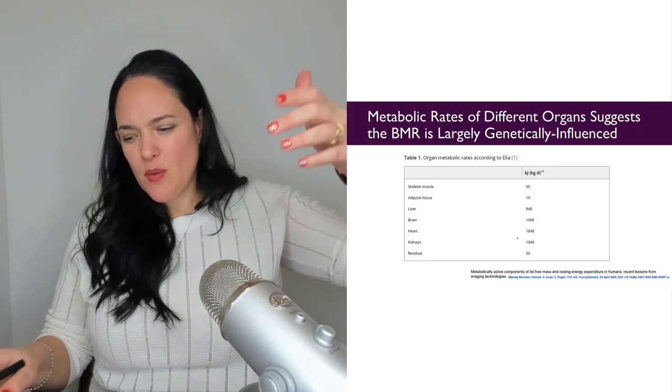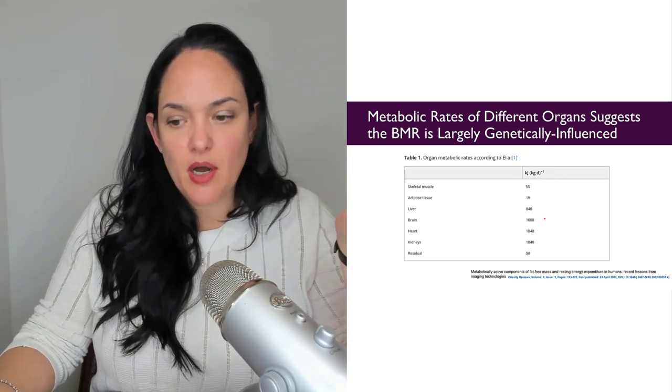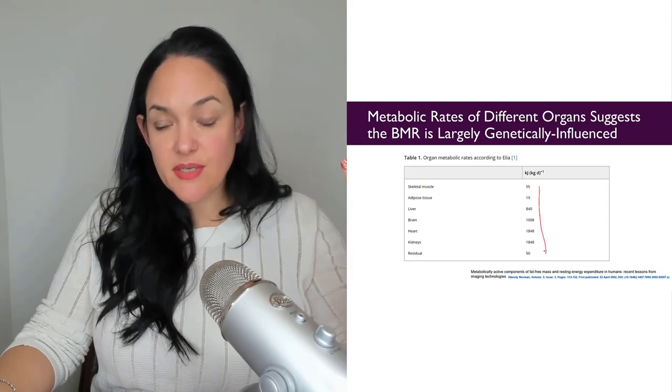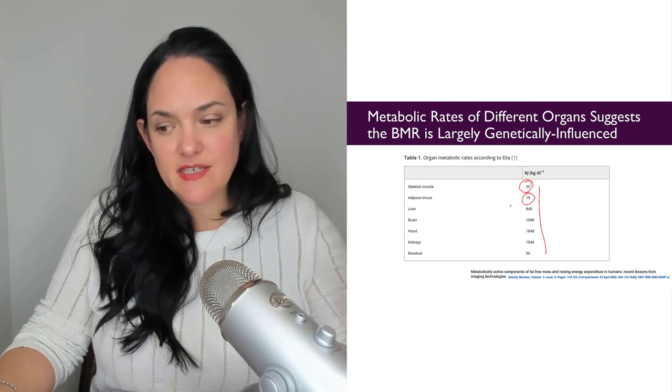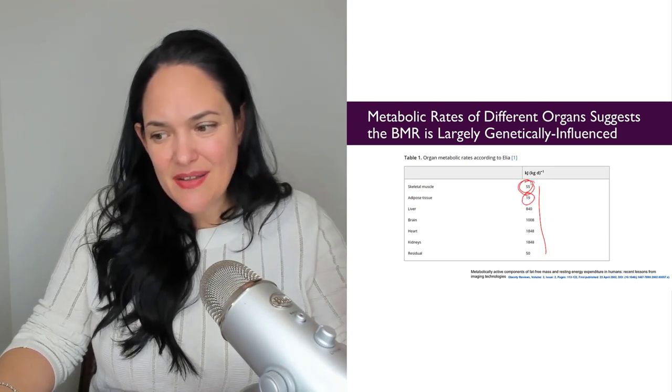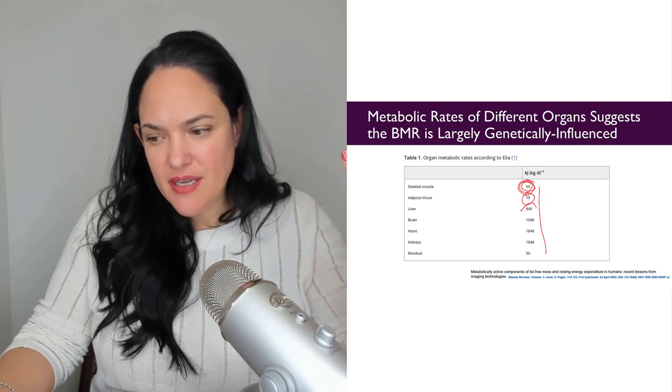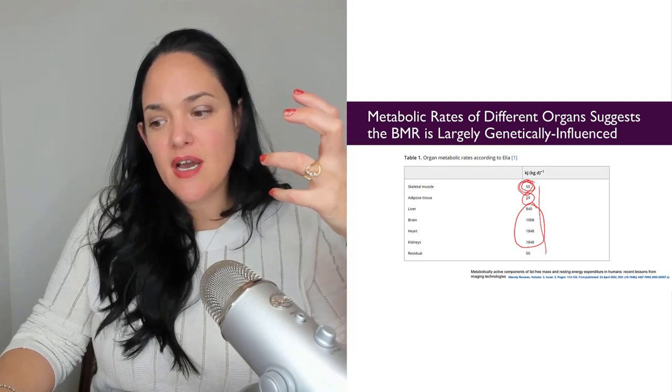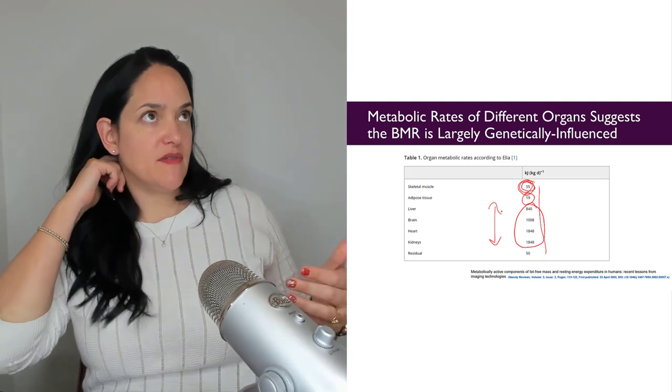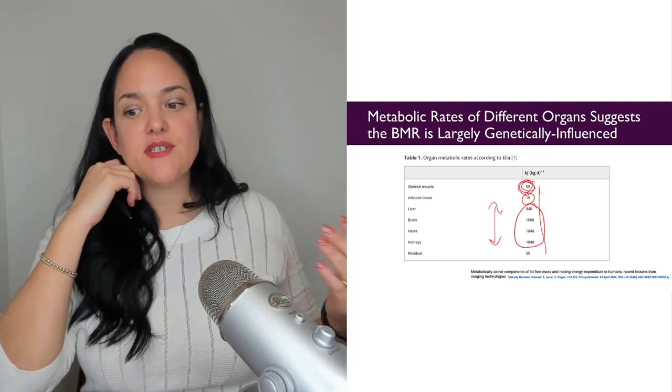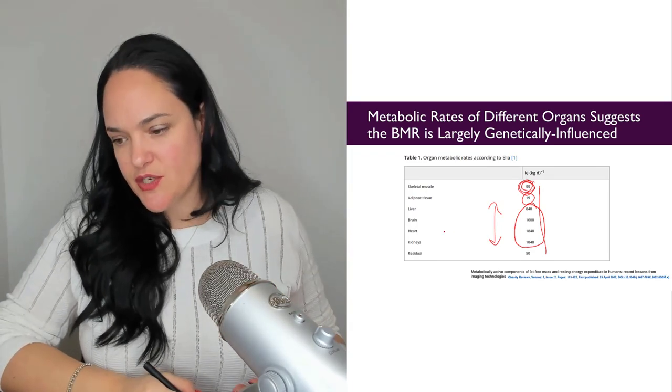And kind of following up on that as well, this next slide breaks down basically how metabolically active different tissues are. And you'll notice that, yeah, of course, skeletal muscle is more metabolically active than adipose tissue, but skeletal muscle metabolic rate is not even close in the magnitude of the metabolic rate from all of these other organs. And they actually believe that one of the reasons why metabolic rate decreases with age is the activity of these organs decreases with age as well.